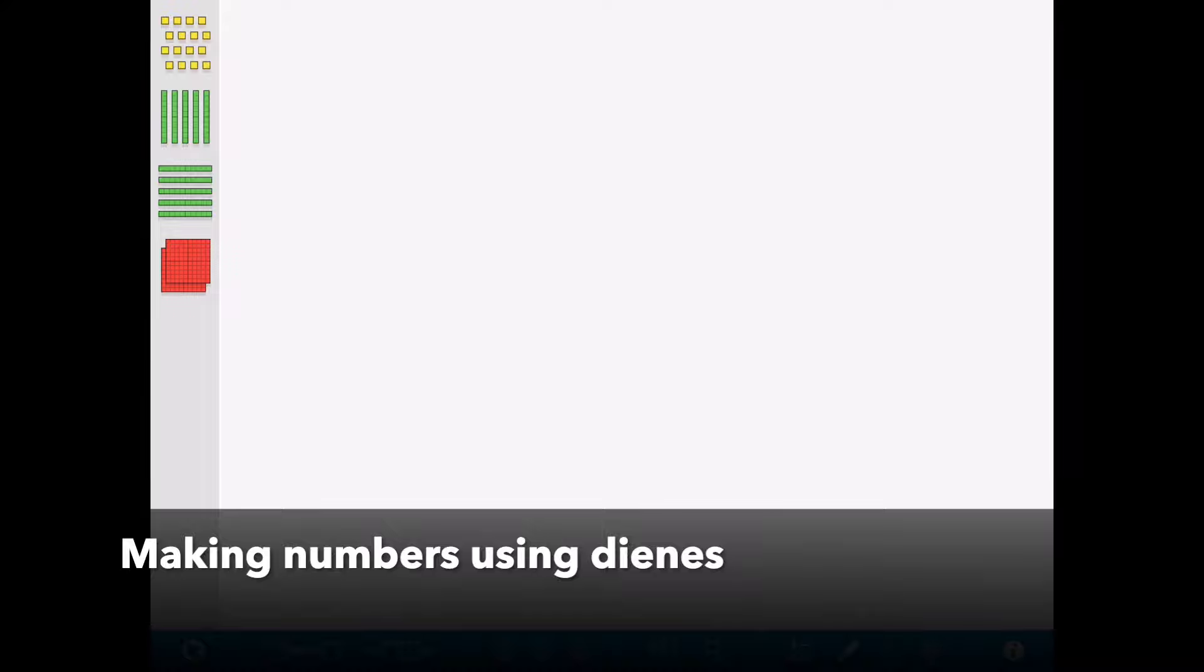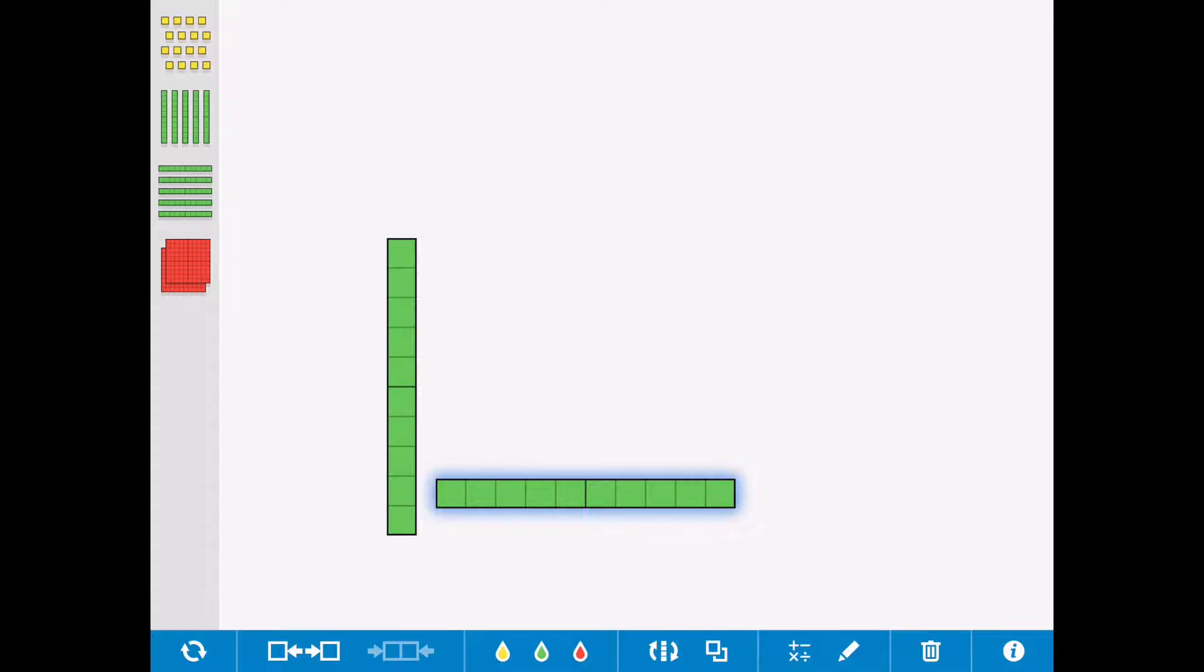Once they are confident that a ten is always a ten, so one of these Dienes is always ten, or one of these Dienes is always ten, whichever way around it is, it's still always ten, then they're able to start using Dienes to make numbers.